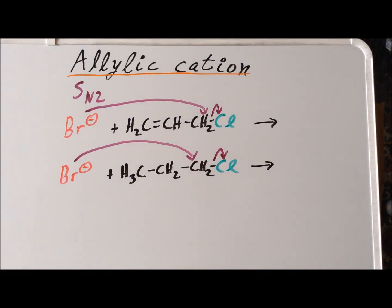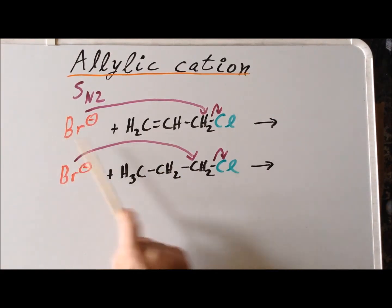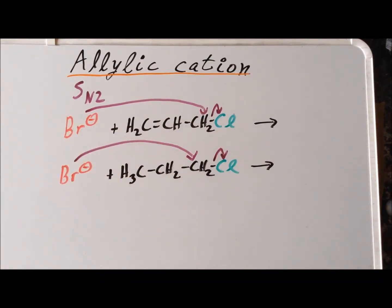Please see the final table listing the energies of activation for the transition states for a series of nucleophiles — including halides and cyanide ion — on allylic structures and then on 1-propyl structures. We'll also see some computed structures for the resulting products.